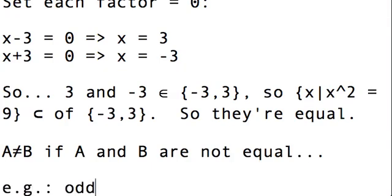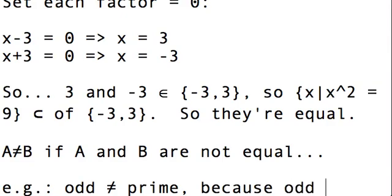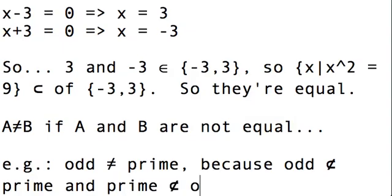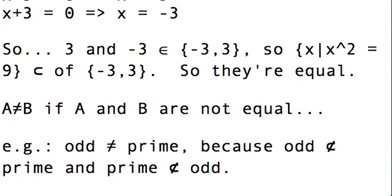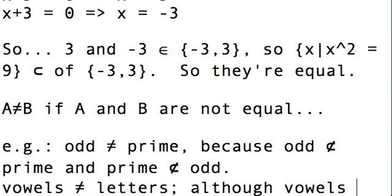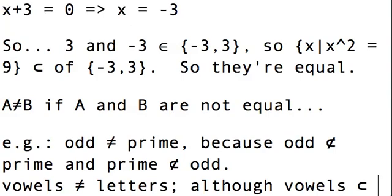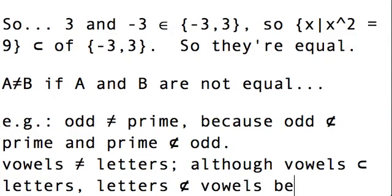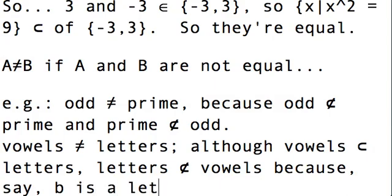So as examples, we've already seen that odd numbers are not equal to prime numbers, and this is because odd numbers are not a subset of prime numbers, and prime numbers are not a subset of odd numbers. So it fails on two counts. But how about this? Vowels are not equal to all letters, although vowels are indeed a subset of letters. Letters are not a subset of vowels, because, say, B is a letter, but not a vowel.